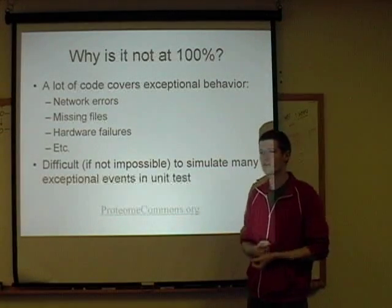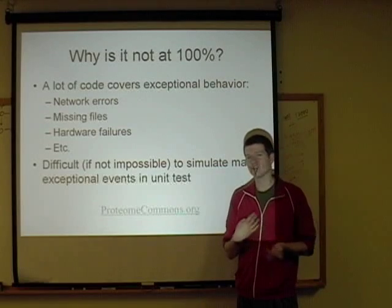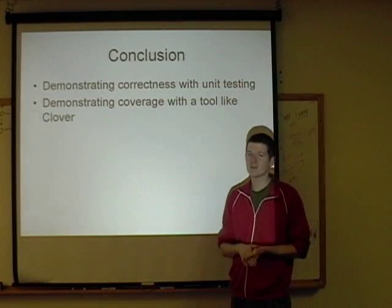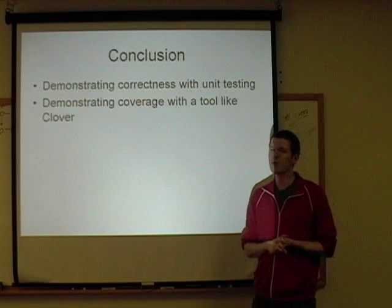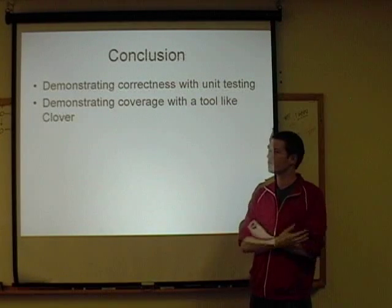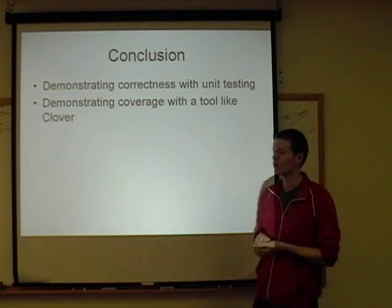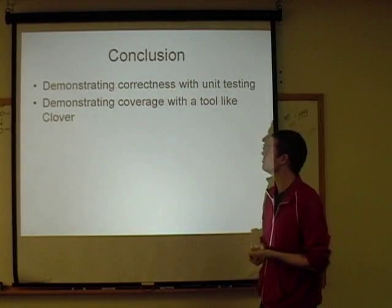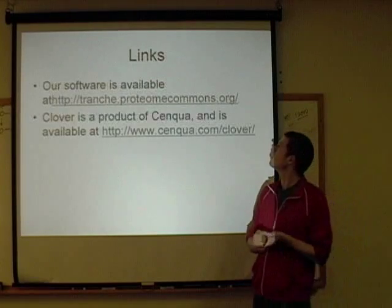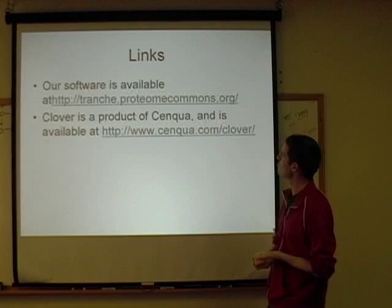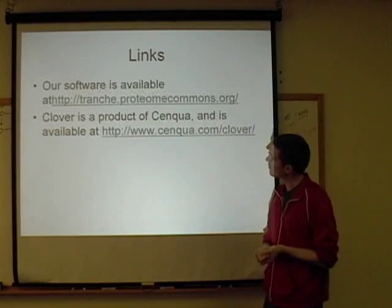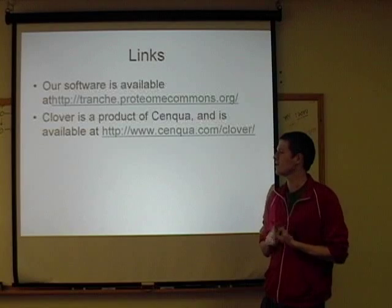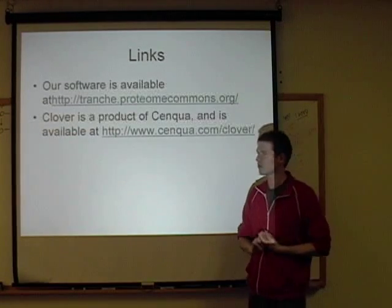So you shouldn't expect 100% coverage. It's very important to set a reasonable goal for your code coverage — that's why we set ours at 80%. The conclusion is: you want to demonstrate correctness with unit tests, and unit testing is very important. However, you don't really know about the quality of your project unless you have something that can demonstrate coverage. We do that with a tool like Clover, which is the missing link in the whole picture. Our software is available at tranche.proteomecommons.org, and Clover is available at www.atlassian.com. It has a free license for all open source projects and a free trial version even if your project is not open source.